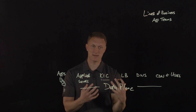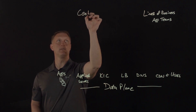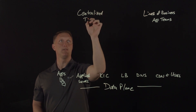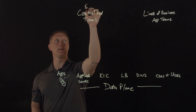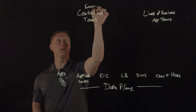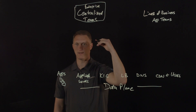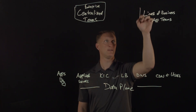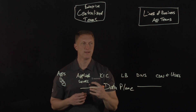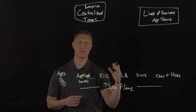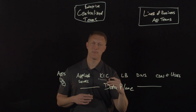As application teams access this shared infrastructure and these application services, you also have what I'm going to call centralized enterprise teams. These would be your NetOps teams, your architects, and those types of teams. Your enterprise teams have things they care about as well — they need supportable, standardized services that can be used across all applications and all application teams.